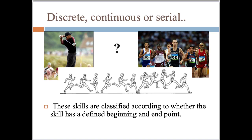Continuous or serial skills are classified according to whether the skill has a defined beginning and end point. A discrete skill has a defined start and end point. A serial skill is made up of a number of discrete skills in sequence. A continuous skill has no defined start or end point.